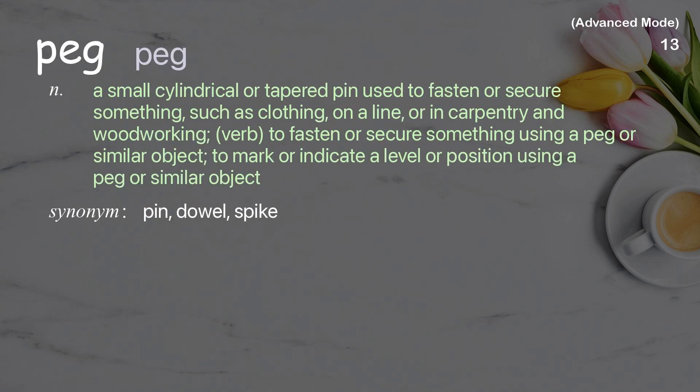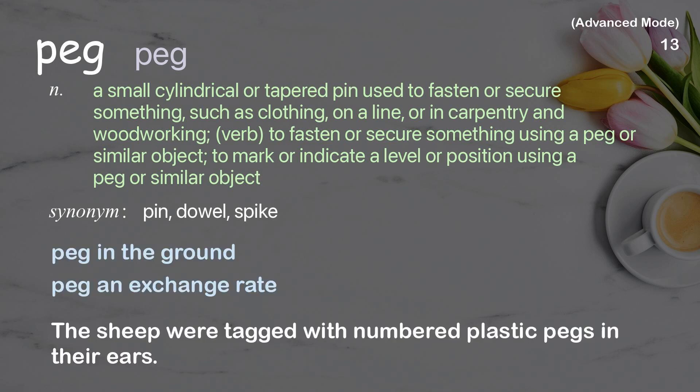Peck. A small cylindrical or tapered pin used to fasten or secure something, such as clothing on a line, or in carpentry and woodworking. Verb: to fasten or secure something using a peg or similar object; to mark or indicate a level or position using a peg or similar object. Examples: peg in the ground, peg an exchange rate. The sheep were tagged with numbered plastic pegs in their ears.